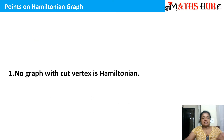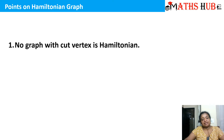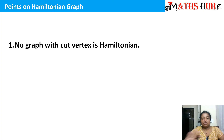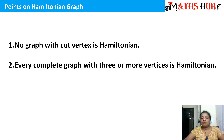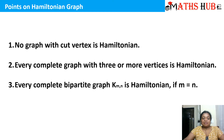Let's discuss some results on Hamiltonian graphs. First, if a graph has a cut vertex, then that graph will never be Hamiltonian. A cut vertex is any vertex whose removal creates two disjoint components. Second, every complete graph with three or more vertices is Hamiltonian. Third, a complete bipartite graph K(m, n) is Hamiltonian if and only if m equals n — that is, both subscripts must be equal.